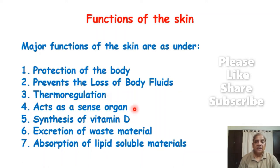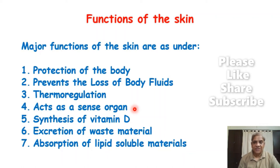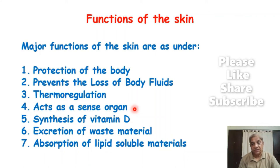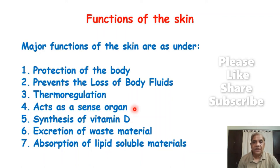The skin also acts as a sense organ — in fact it is the largest sense organ of the body, which is why it was sometimes called an organ rather than a system. The senses transmitted from the skin include touch, heat, and temperature. Even the lightest touch can be perceived, making the skin very sensitive, which also indirectly protects the body. Another function is the synthesis of Vitamin D in the skin in the presence of sunlight, which is essential for absorption of calcium from the intestine.